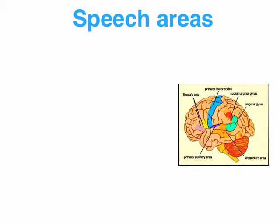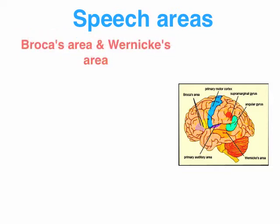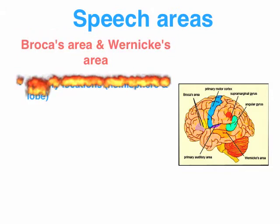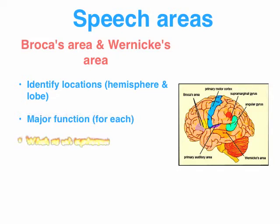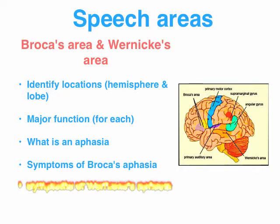This clip is in response to a request to cover some of the nuances of area study number one. I'll start by looking at Broca's versus Wernicke's area and we'll address the following: identifying the location, major functions, discussing what an aphasia is, and dealing with symptoms of both Broca's and Wernicke's.